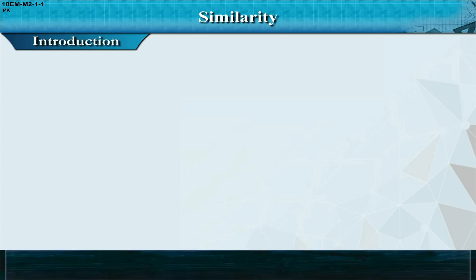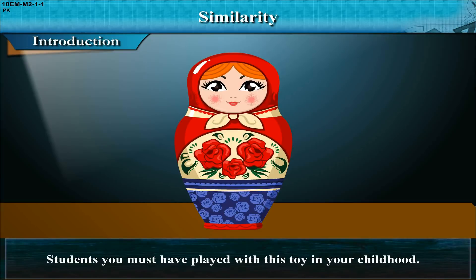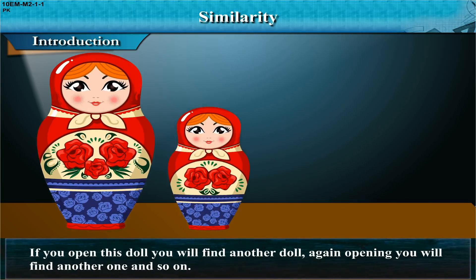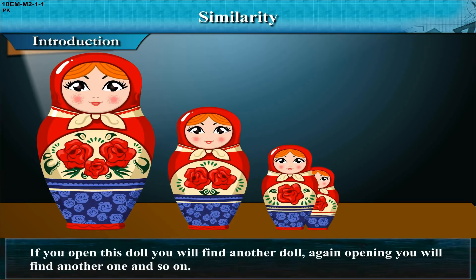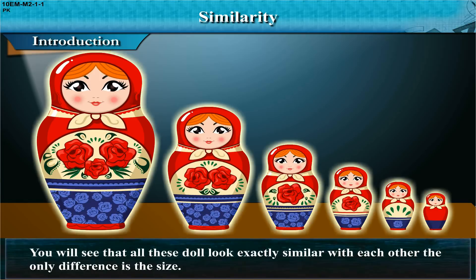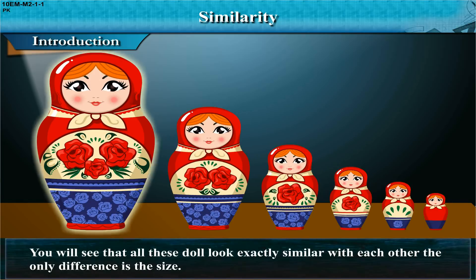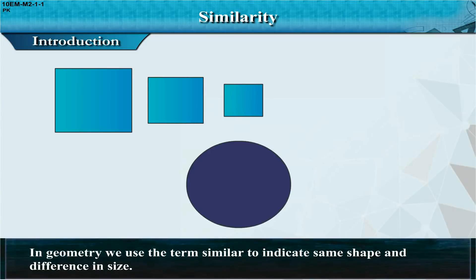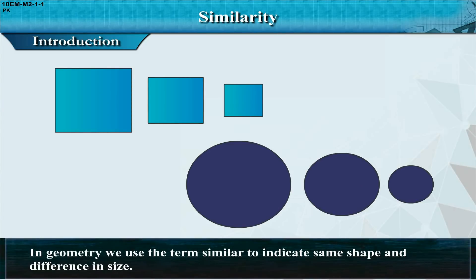Introduction to similarity: students, you must have played with this toy in your childhood. If you open this doll you will find another doll; again opening you will find another one and so on. You will see that all these dolls look exactly similar to each other — the only difference is the size. In geometry, we use the term 'similar' to indicate same shape and difference in size.